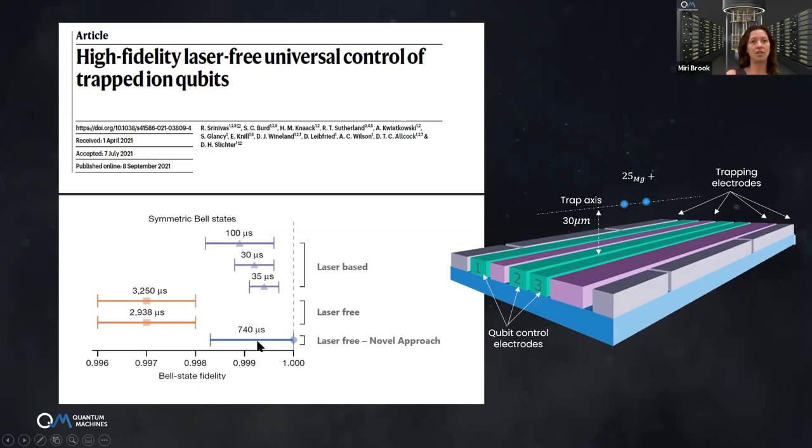Here they show, they benchmark their fidelity of the Bell state compared to previous work. The signals over here are the fidelity, and here is the error. You see that they really pushed the limit, and this is a record fidelity, compared to both laser-based implementations and previous laser-free implementations. The advantage here, on top of just pushing the fidelity higher, is to speed up the operations. This is really cool work, and I want to show you how we can implement the control scheme that was used to reach these fidelities with the QOP.